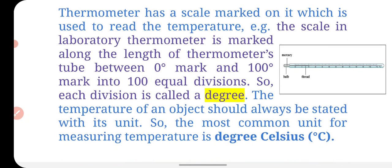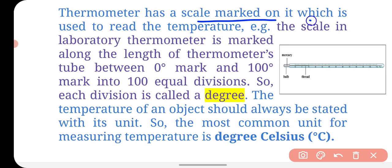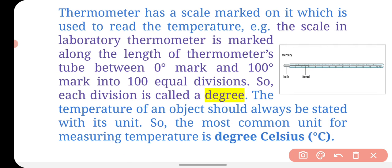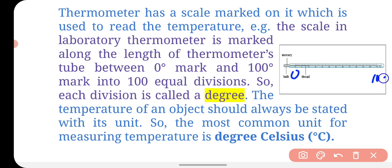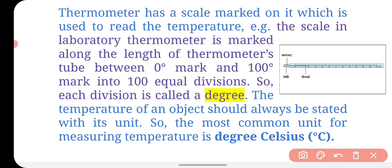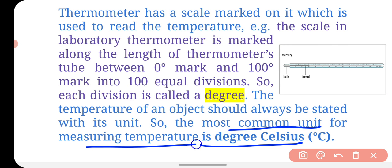The thermometer is very effective for reading temperature. For a laboratory thermometer, the scale runs between 0 degree marks and 100 degree marks, with 100 equal divisions. Each division represents one degree.